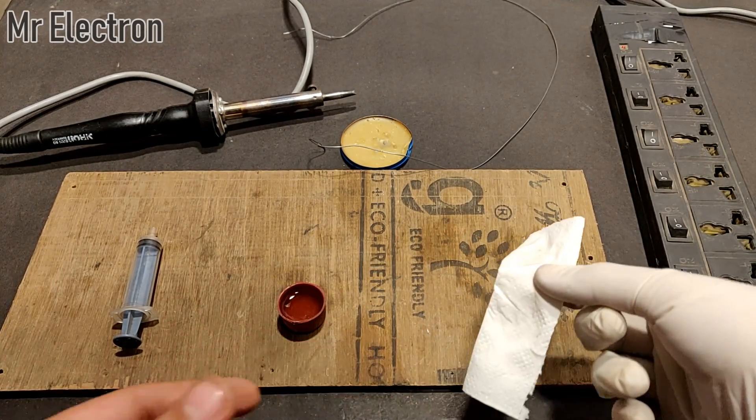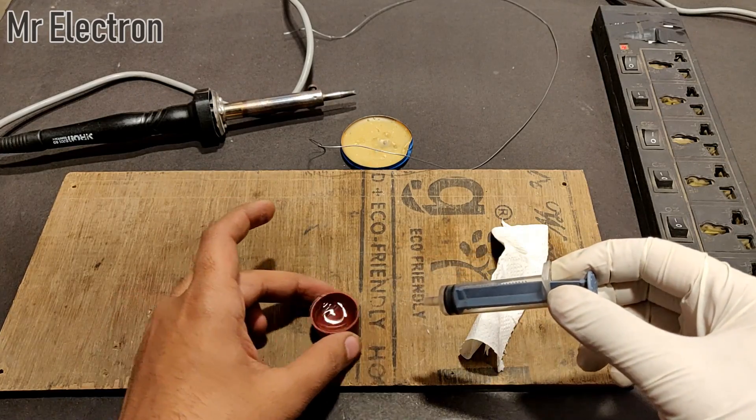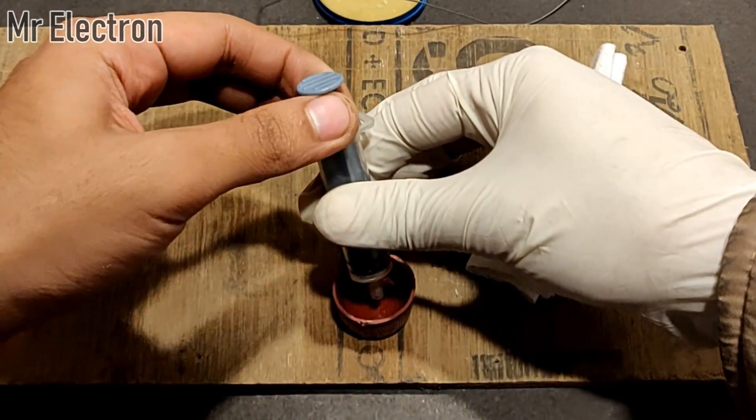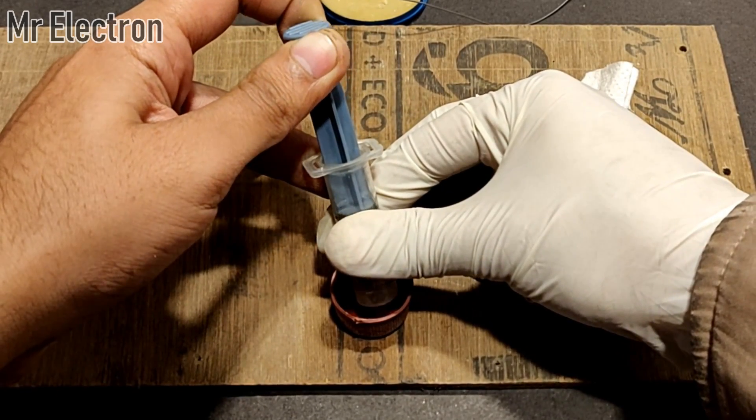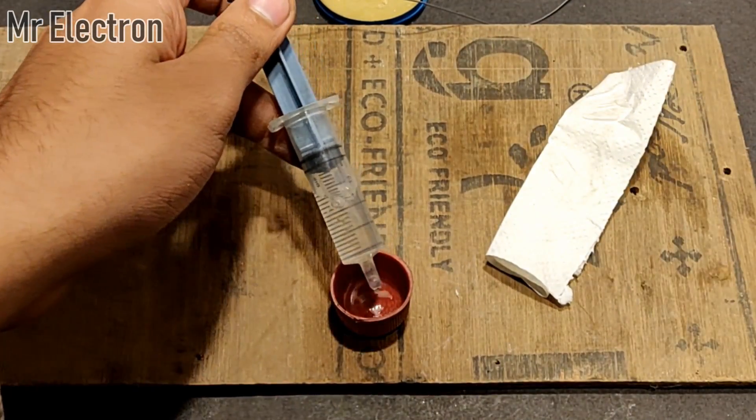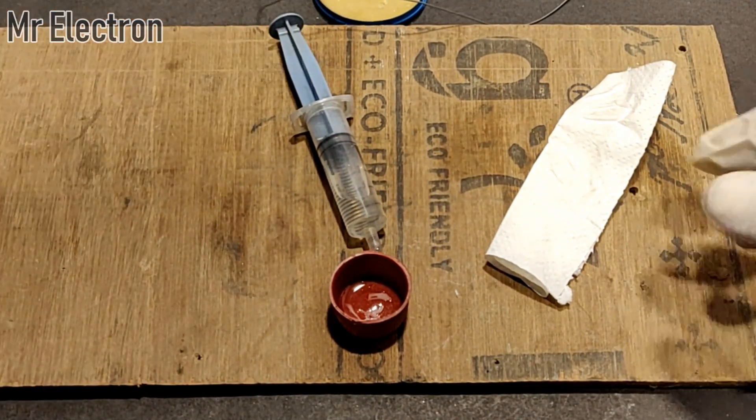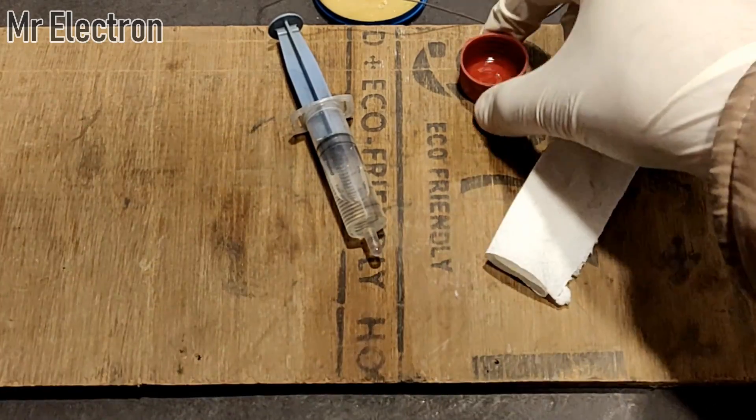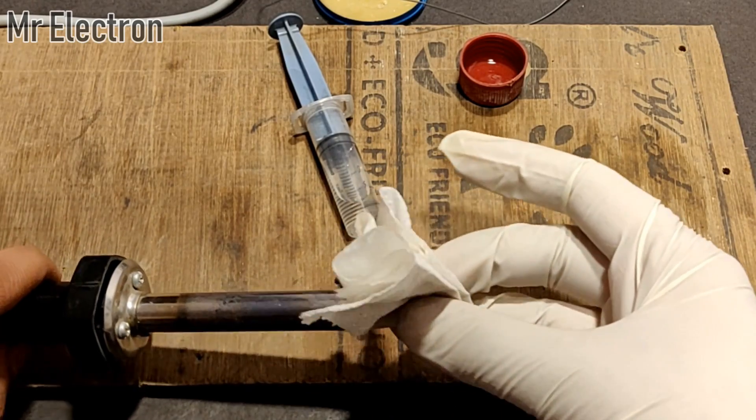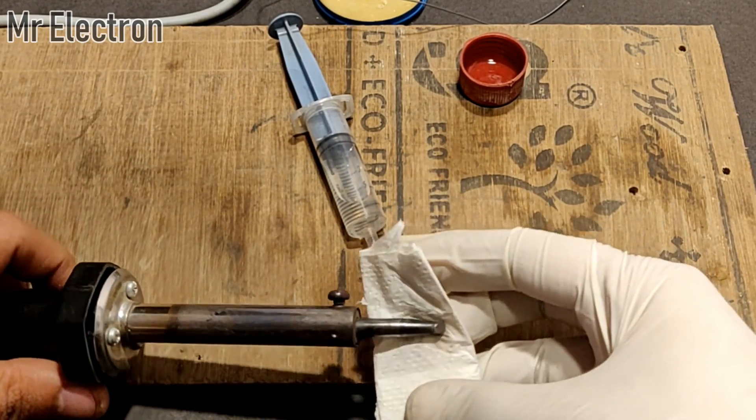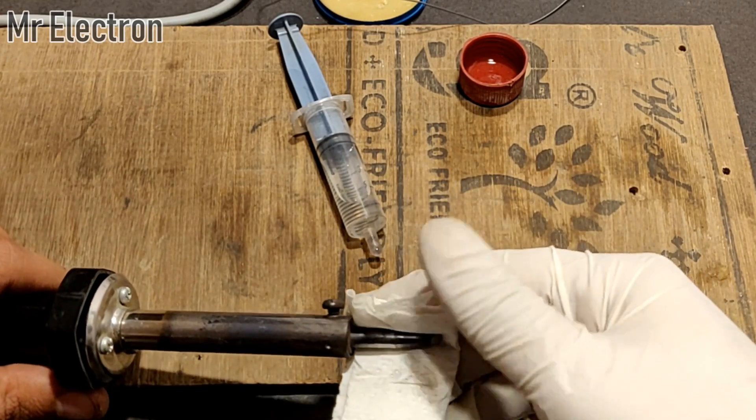Now fill the syringe with the sulfuric acid. Okay, although we are not going to need this much, but still, okay. Now let's cover the tip with the tissue paper.